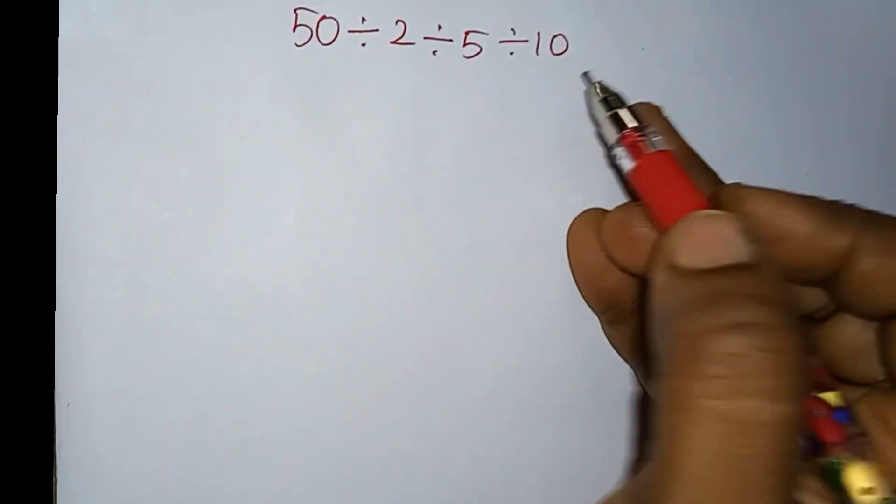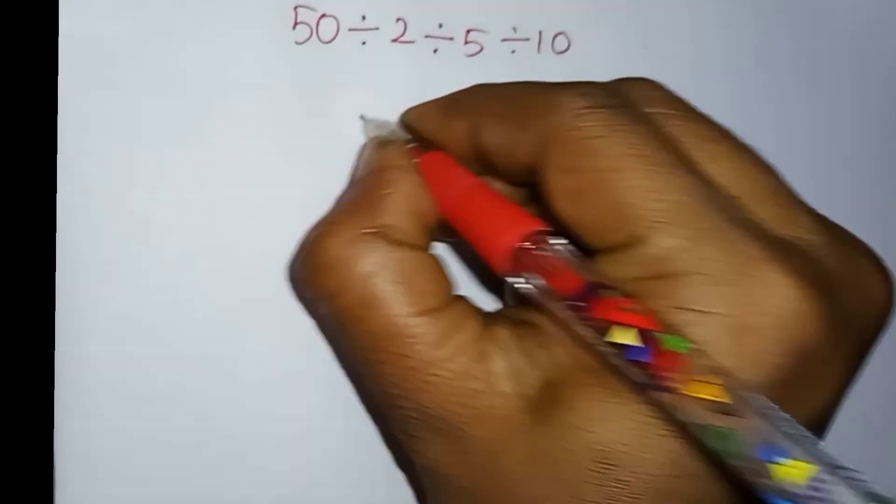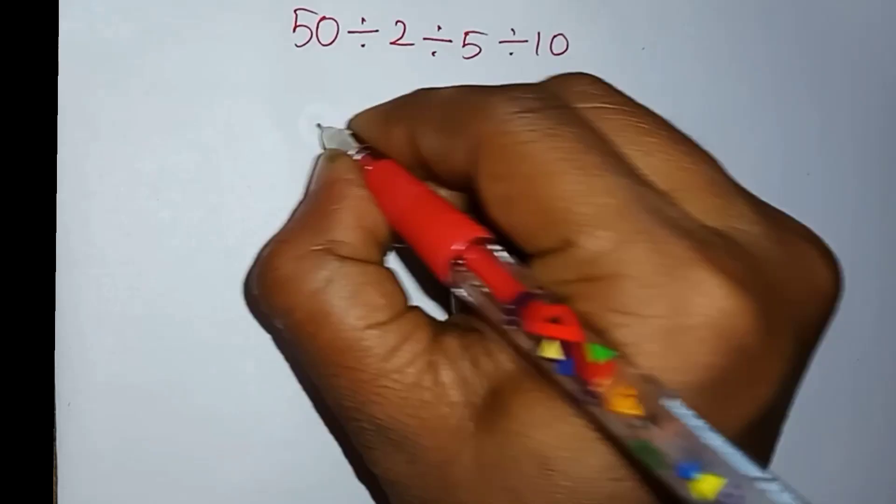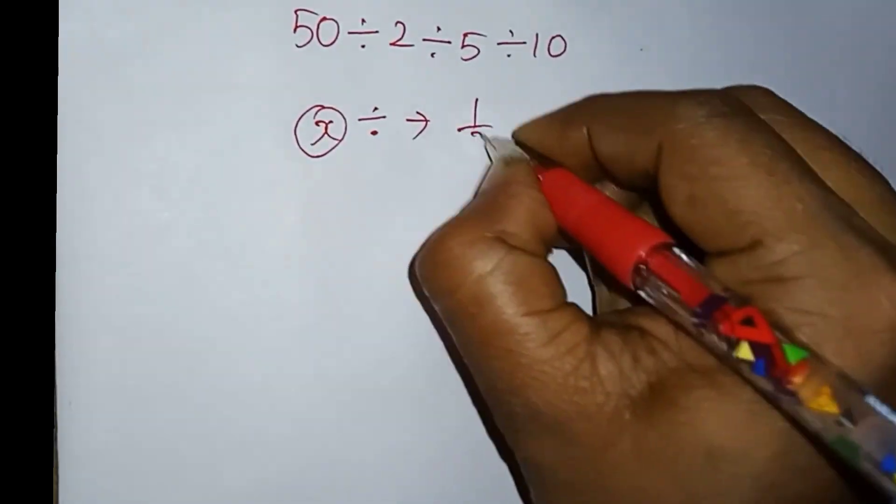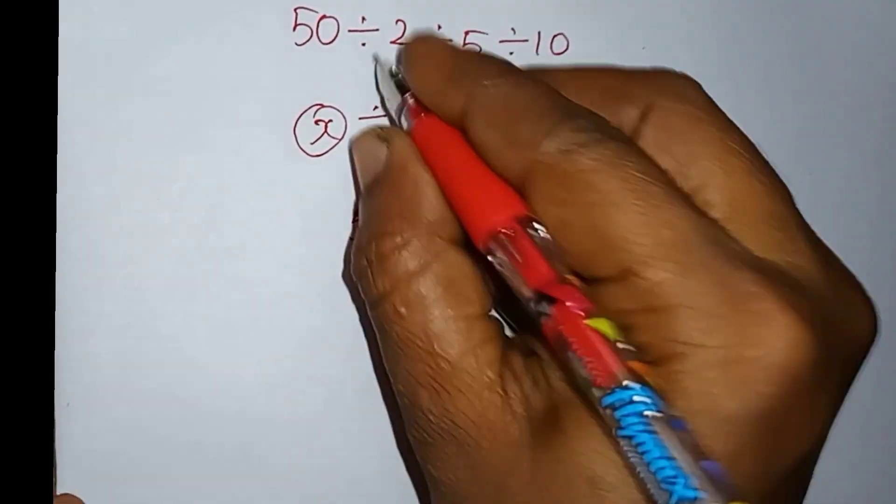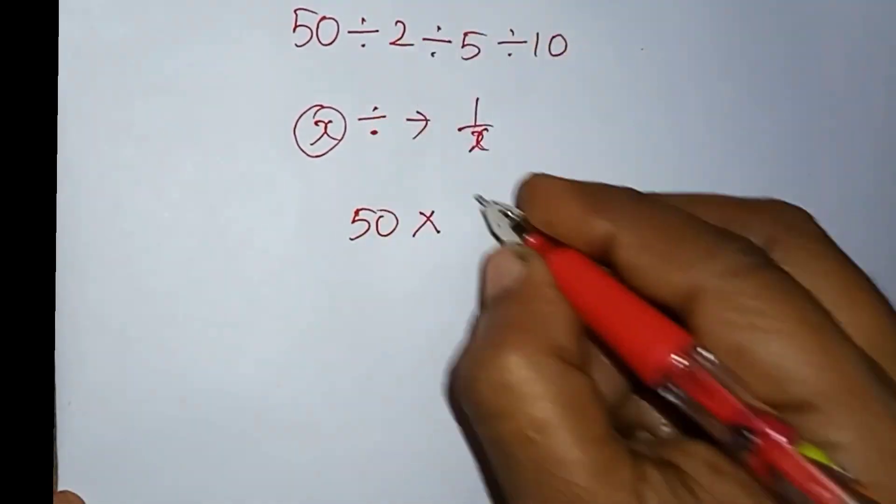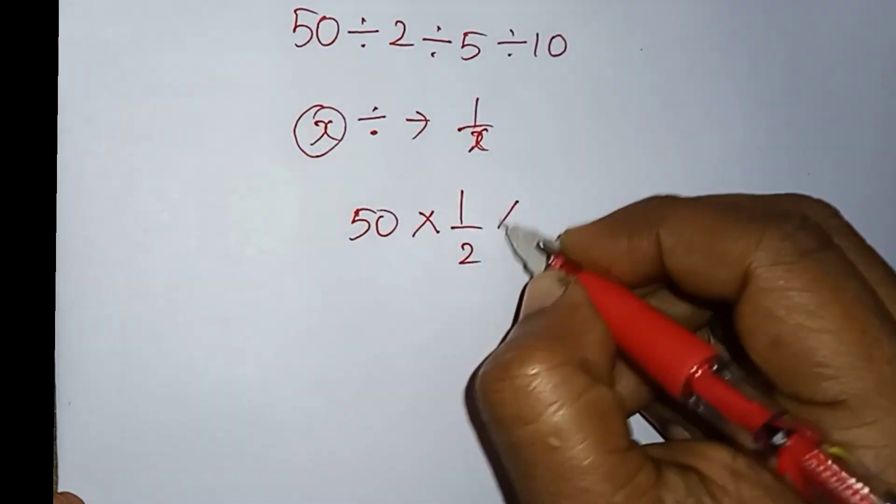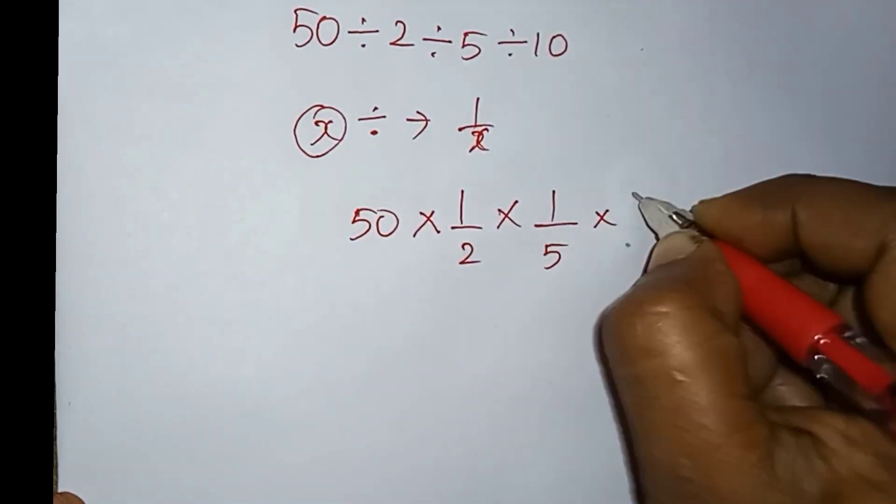How do we find division? The division 50 divided by 2 divided by 5 plus 10. We convert the division into multiplication. With multiplication, it is 50 times 1 by 2, times 1 by 5, times 1 by 10.